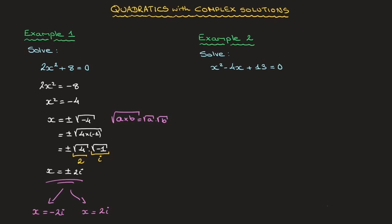Let's work through the second example. In this case, we have to solve x squared minus 4x plus 13 equals 0. We're dealing with a quadratic of the more general form ax squared plus bx plus c equals 0, where a equals 1, b equals negative 4, and c equals 13.